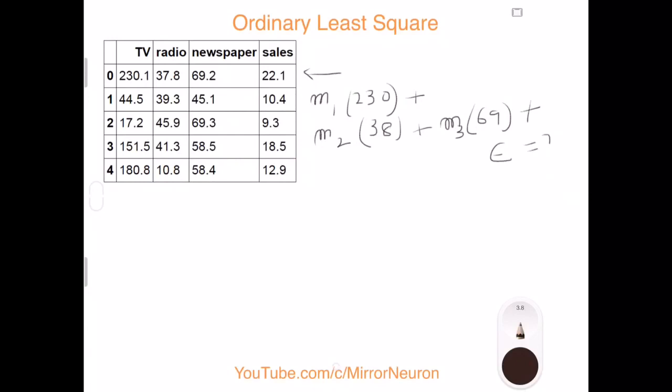And this will be equal to say 22, and this is equation 1. Similarly for record number 2, we can have the same expression: m1 times 45 plus m2 times 39 plus m3 times 45 plus some error equal to 10. This is equation 2.